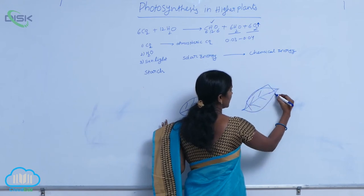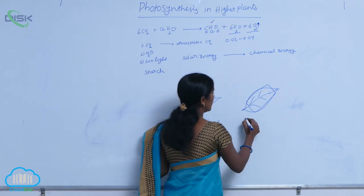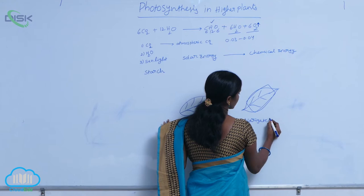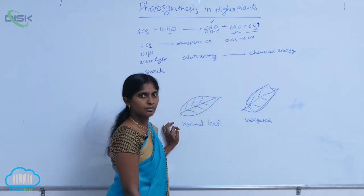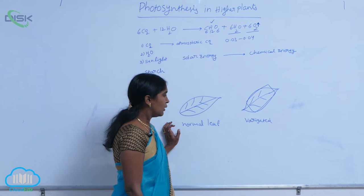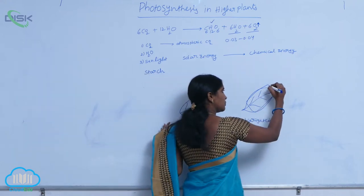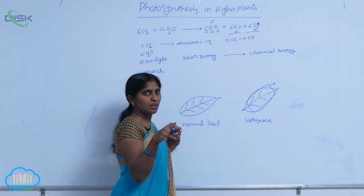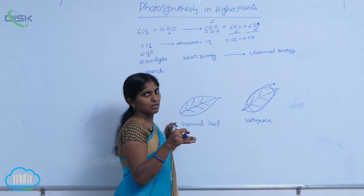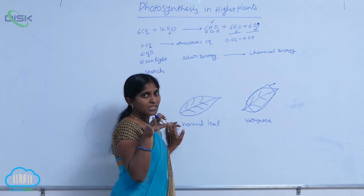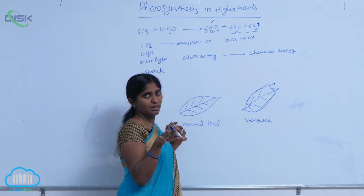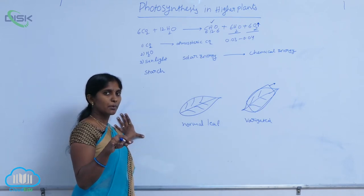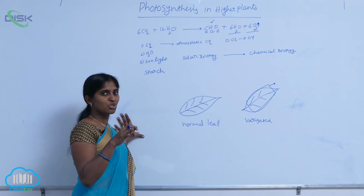The black-tape-covered leaf is called a variegated leaf. The black tape stops the sunlight, and also it stops photosynthesis there. So on the variegated leaf, photosynthesis is stopped — the sunlight is obstructed.